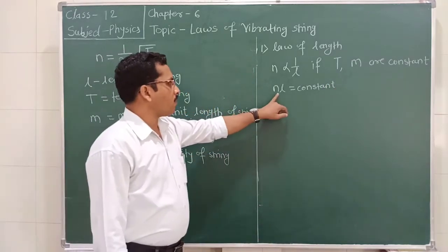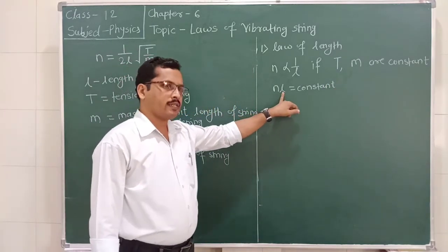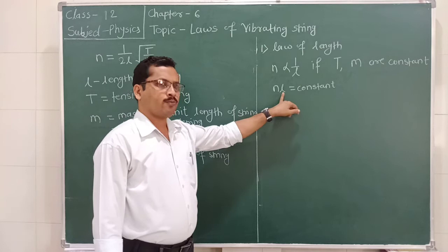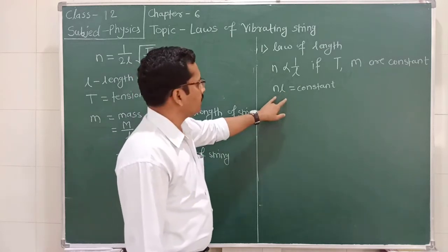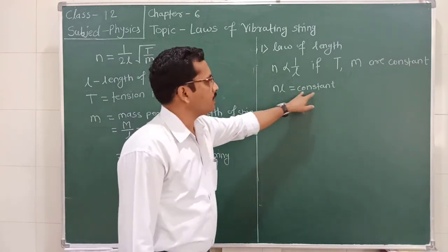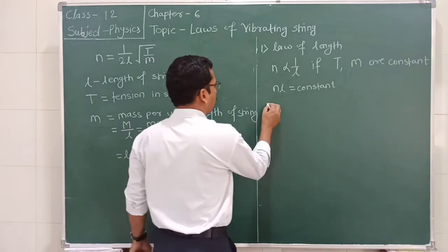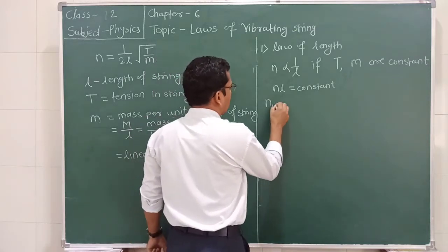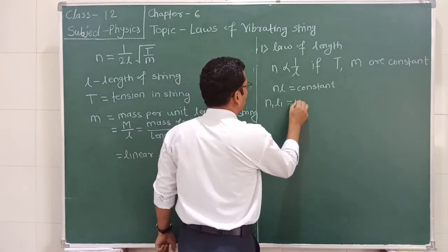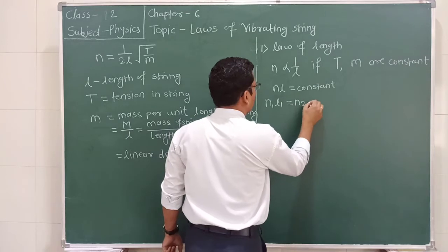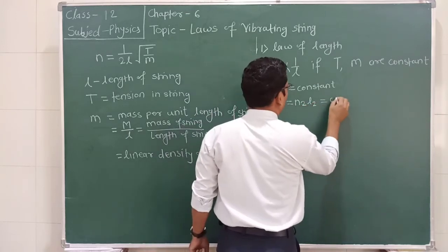This means the product of fundamental frequency and its corresponding length is equal to a constant. We can write this as n1·L1 is equal to n2·L2, which remains constant.